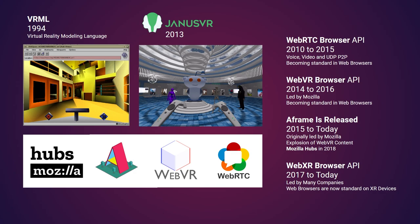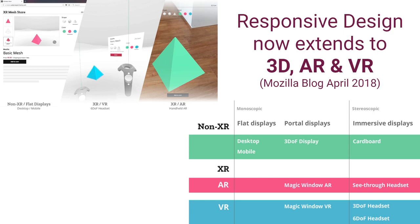Then WebXR came out, bringing augmented reality to the browser along with virtual reality in one unified framework. Now WebXR devices are all over — in fact, the majority of immersive devices are WebXR devices. Mozilla showed in 2018 how we could actually extend responsive design — design that takes a unified experience for desktop and mobile — and extend that to augmented reality and virtual reality. They did an incredible blog post in April of 2018 that really laid out how this could be done and how it's the future, and it's really where our team was inspired to take this idea further.